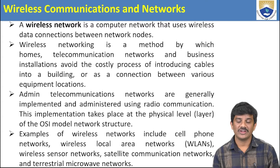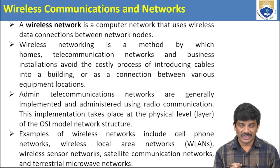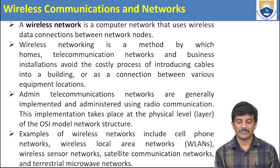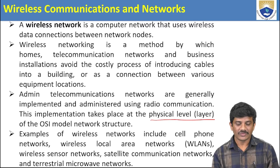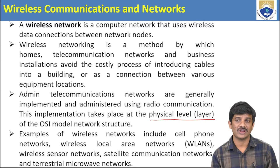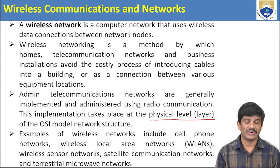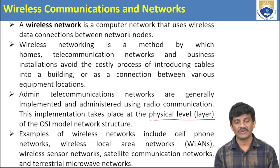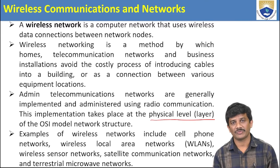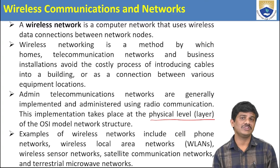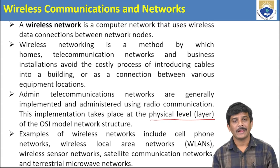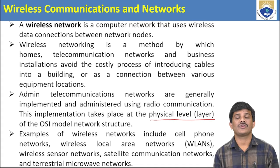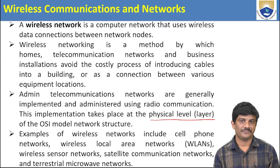We can use radio communication to implement these networks, which are placed beneath the physical layer of the OSI model network structure. Examples of wireless communication networks include cell phone networks, wireless local area networks, wireless sensor networks, satellite communication networks, and microwave networks. We need a node; from that node we can share information to other devices. Wireless networks can be used everywhere — homes, business areas, or hospitals.